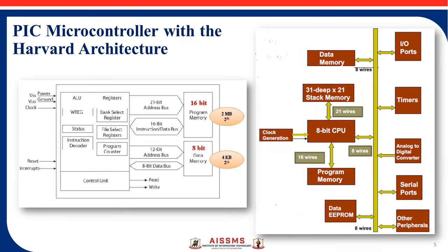This is the PIC microcontroller with Harvard architecture — the architecture diagram. In this block diagram, there is 16-bit program memory and 8-bit data memory. The 16-bit program memory has an address bus and data bus: 21-bit address bus and 16-bit data bus. Similarly, data memory is 8-bit with a 12-bit address bus and 8-bit data bus. This is the memory organization of PIC 18 microcontroller.